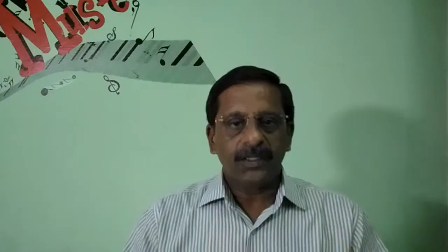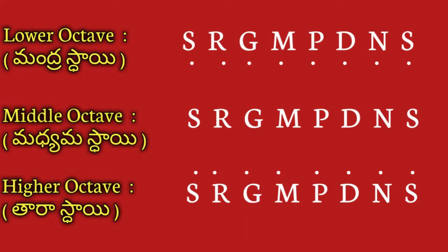How do you identify which category a Swara belongs to? When you observe any notations or Swaras of any Kritis, Kirtanas, or Githams, you find some dots are placed above the Swaras or below the Swaras, and some Swaras will have no dots at all. These dots indicate to which octave the Swaras belong. For example, if the dots are placed below the Swaras, they belong to the lower octave range.